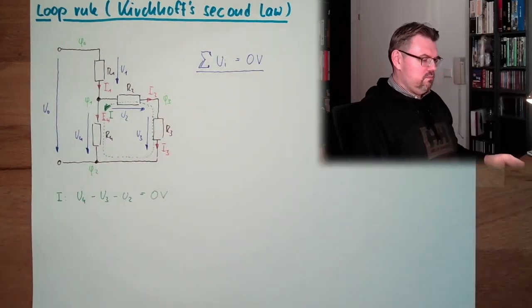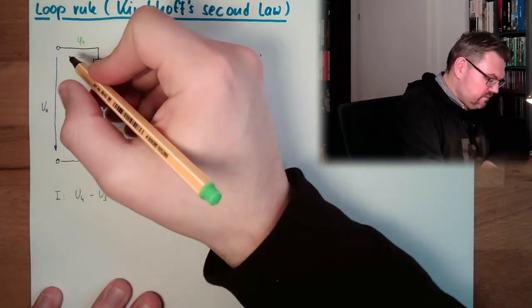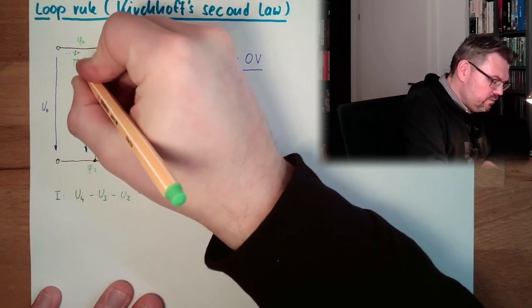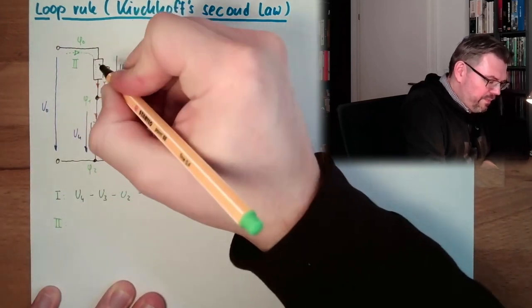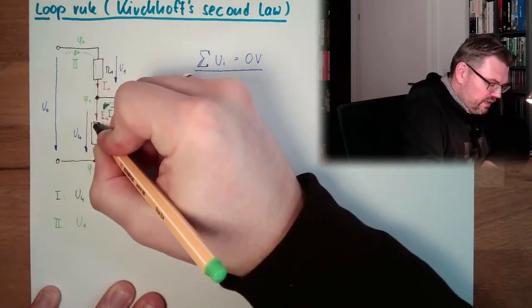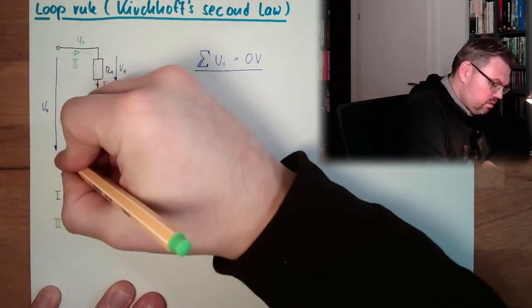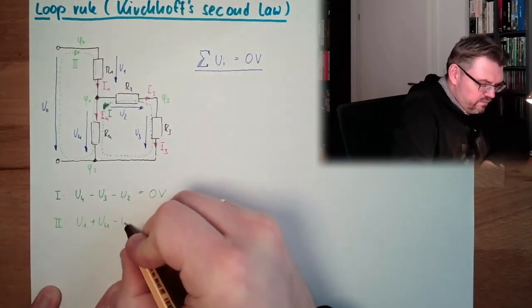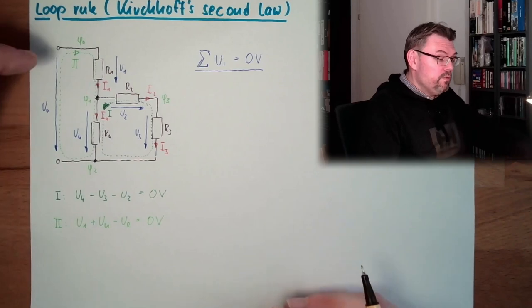Let's make a second loop. Let's start here and this time let's start in this direction, loop number two. Going down, first one we are passing is U1 in the same direction, U1. Second one we are passing is U4 same direction plus U4, and now we are passing U0 negative U0.